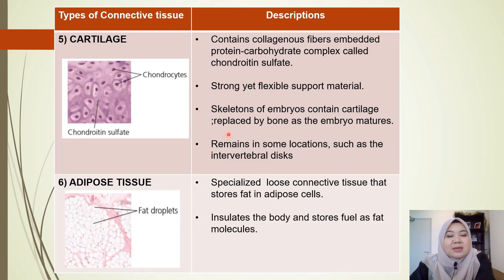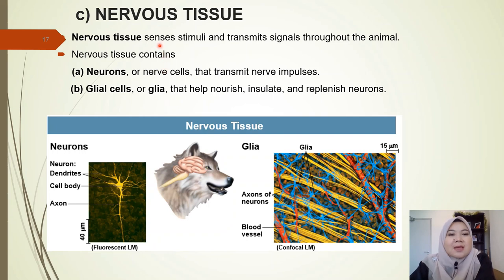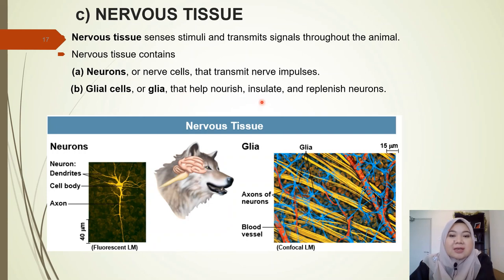Moving on to nervous tissue. Nervous tissue senses stimuli and transmits signals throughout the animal. It contains neurons, or nerve cells, that transmit nerve impulses, and glial cells (glia) that help nourish, insulate, and replenish neurons. We will discuss neurons in more detail in a future chapter on the nervous system.